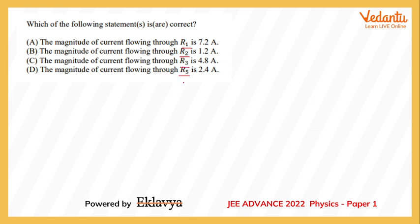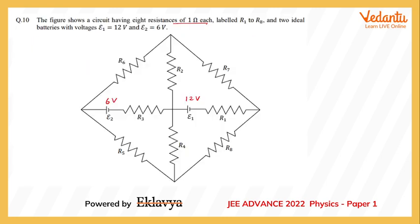We need to find the current through four specific resistances mentioned in the options. This means I should solve the circuit in a manner that enables me to find the current in any resistance. Let's see how we can proceed.